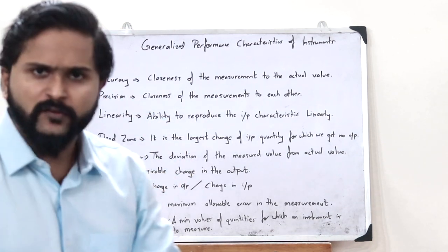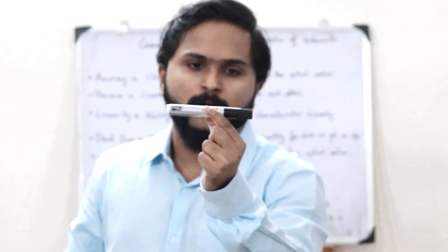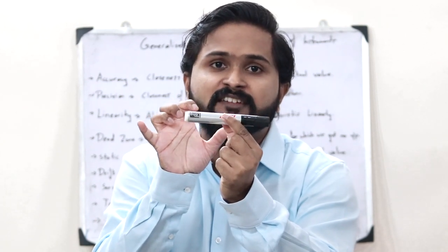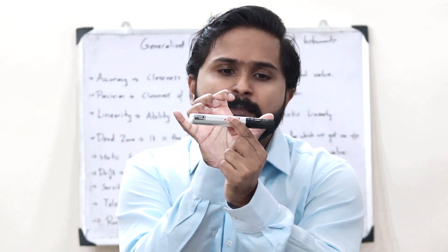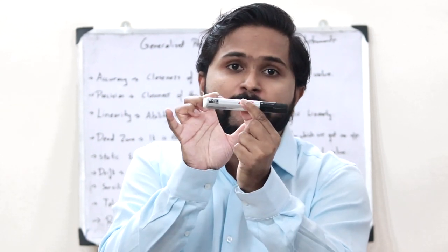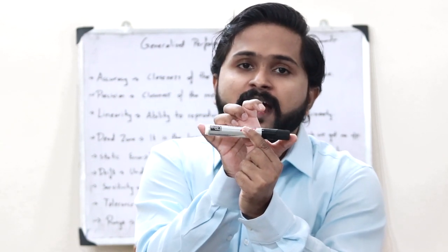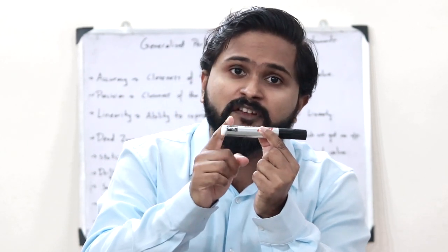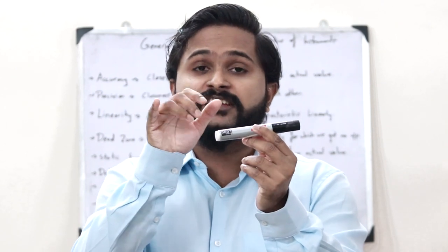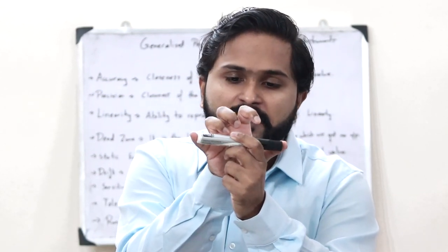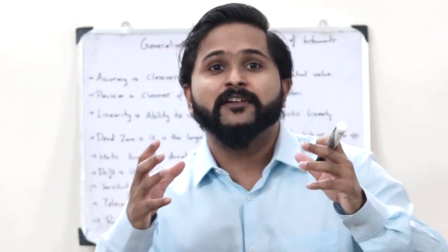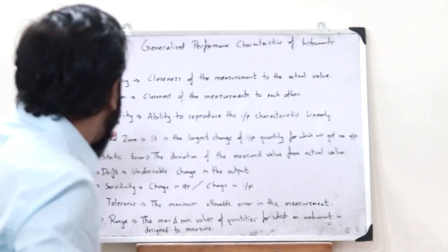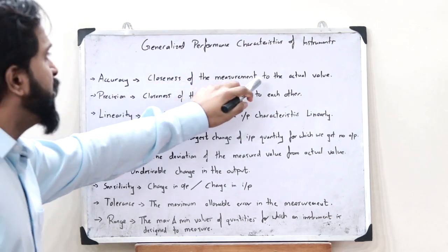The first characteristic is accuracy. Imagine this particular pen is 10 centimeters long. If I measure it with an instrument and the instrument tells me the length is 12 centimeters, then that instrument is not accurate because the actual length is only 10 centimeters. But if the instrument tells me the length is 10 centimeters, then that instrument is accurate. Accuracy is the closeness of the measurement to the actual value.